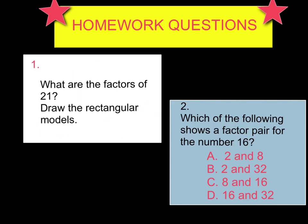So let's take a look at our 2 homework questions for tonight. Our first homework question says, what are the factors of 21? Think about your factors of 21. What are all the numbers you can multiply together to get the product of 21? And then, once you find those, draw the rectangular models to show your pictures. Next question, which of the following shows a factor pair for the number 16? Would it be 2 and 8? Are 2 and 32 factor pairs? Are 8 and 16 factor pairs? Or are 16 and 32 factor pairs? Now remember, a factor pair are 2 numbers that you multiply together to equal your product. So think about which 2 of these numbers would you multiply together to get the product of 16.